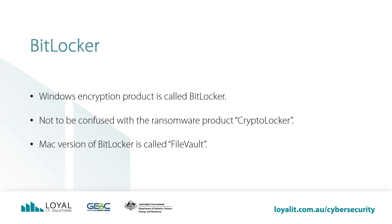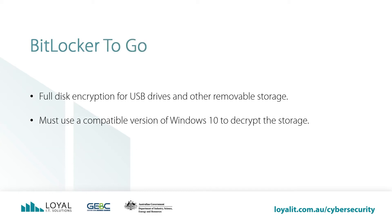As most business machines are Windows, we will take a closer look at Windows' full disk encryption product called BitLocker. Not to be confused with the ransomware product CryptoLocker, which locks all of your data using encryption but then asks for ransom payments. BitLocker uses encryption in a similar way, but is benign and is used to protect your data rather than take it away from you. The Mac version of BitLocker is called FileVault. BitLocker to Go is the portable version of BitLocker. It uses full disk encryption to encrypt USB drives and other removable storage. In order to read the contents of the drive, you must know the key and use a compatible version of Windows 10 to decrypt the storage.